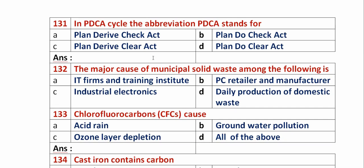Question 131: In the PDCA cycle, what does the abbreviation PDCA stand for? Option A: Plan, Do, Check, Act. Option B: Plan, Do, Check, Act. Option C: Plan, Derive, Clear, Act. Option D: Plan, Do, Clear, Act. PDCA stands for Plan, Do, Check, Act. So option B is the right answer.